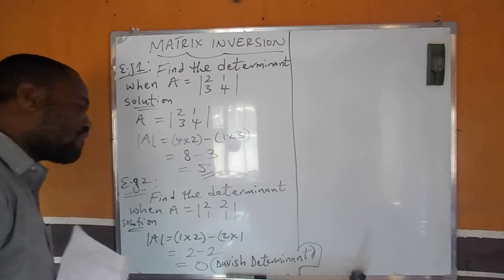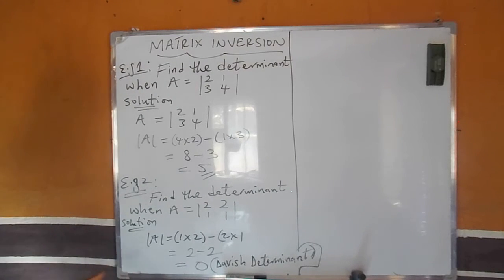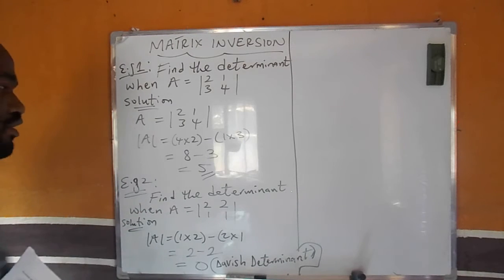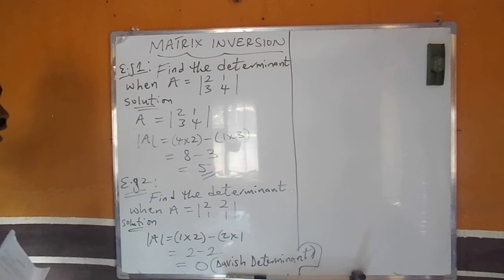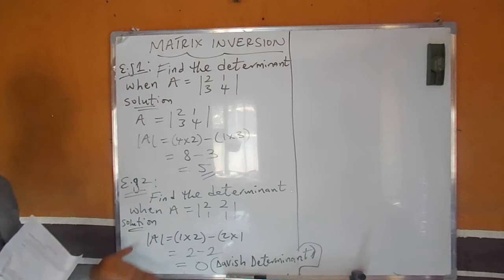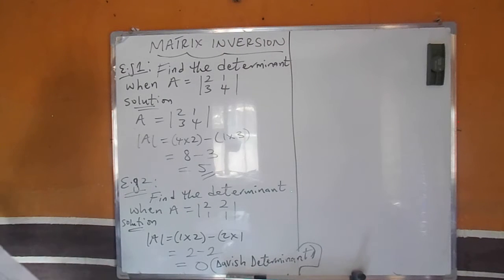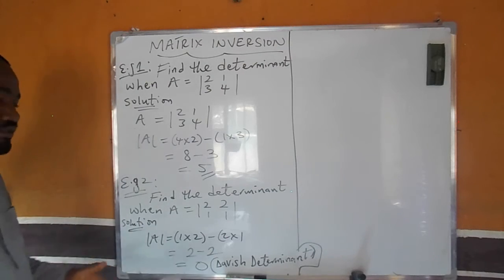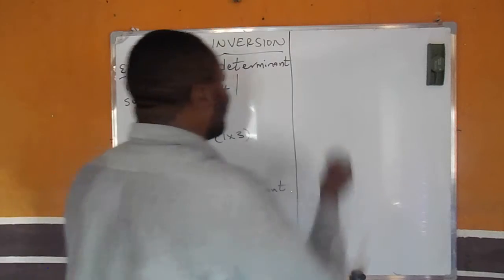When you get a vanishing determinant, that means we cannot solve further. Because if you still want to solve for X, Y, or Z, you cannot proceed. However, situations where you can solve further include when you have something like 2A — 2 multiplied by the 0 you got will still give you 0 — or expressions like 2A plus 2B.